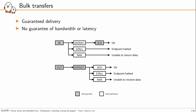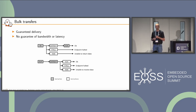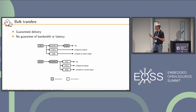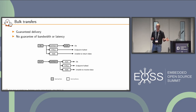Let's look at the standardized transfer types defined in USB. The first is the bulk transfer. The system guarantees delivery of this transfer, but there is no guarantee in terms of bandwidth or latency. They are present in both directions, IN and OUT. This direction is from the host's point of view: IN is from device to host, and OUT is from host to device.